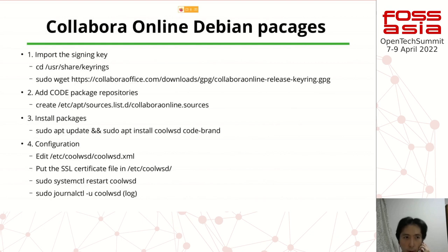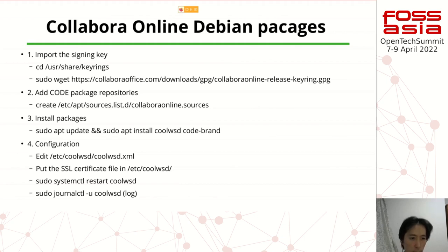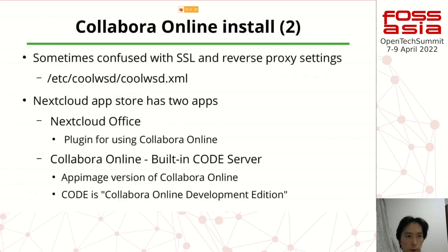In the Debian package case: import the key, add the repository, install, and then configure. Some cases are difficult — for example, SSL settings and reverse proxy settings. You can also check the Collabora website for guidance.